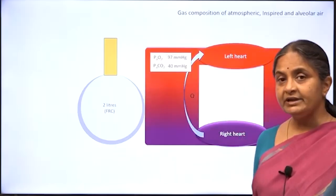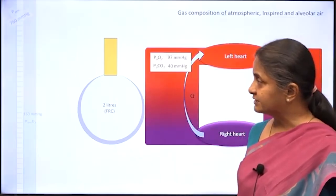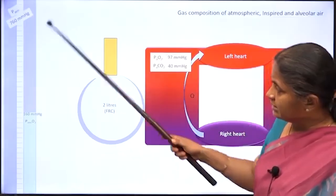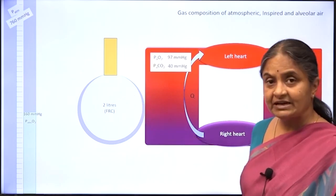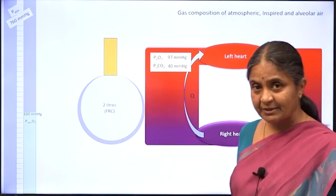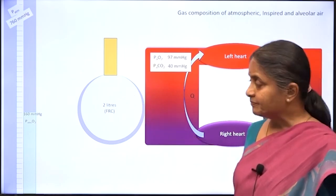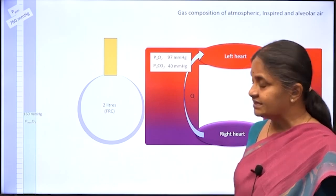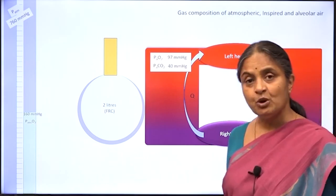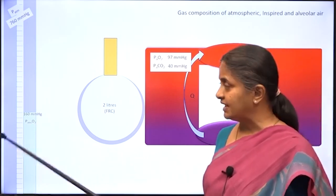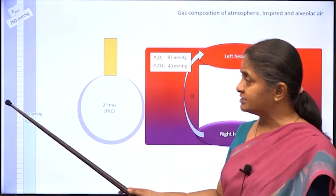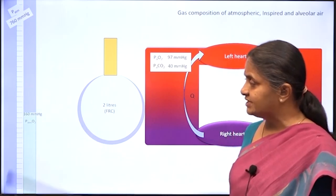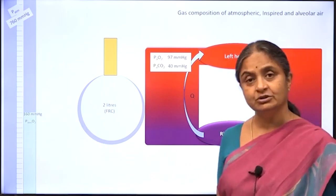Let us start looking at gas composition in atmospheric air. The total atmospheric pressure at sea level is 760 mmHg, and of that, 160 mmHg is due to oxygen, the rest being nitrogen. What is shown in purple represents nitrogen and what is in green represents oxygen.